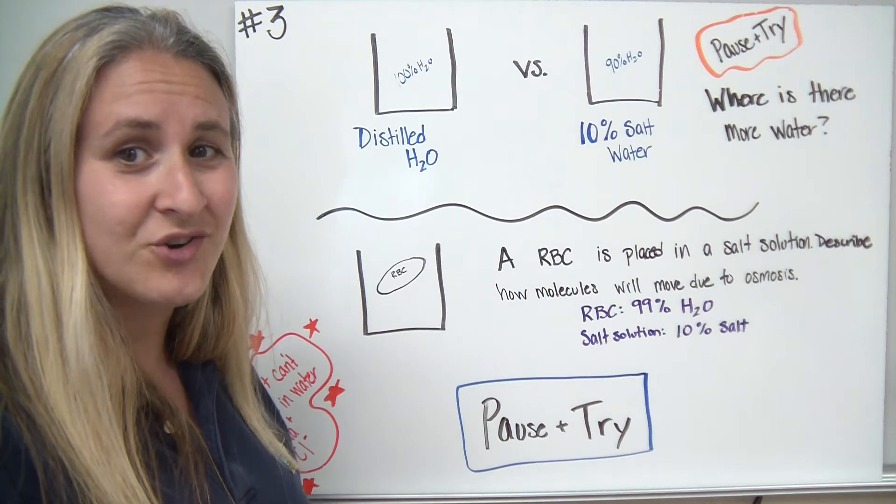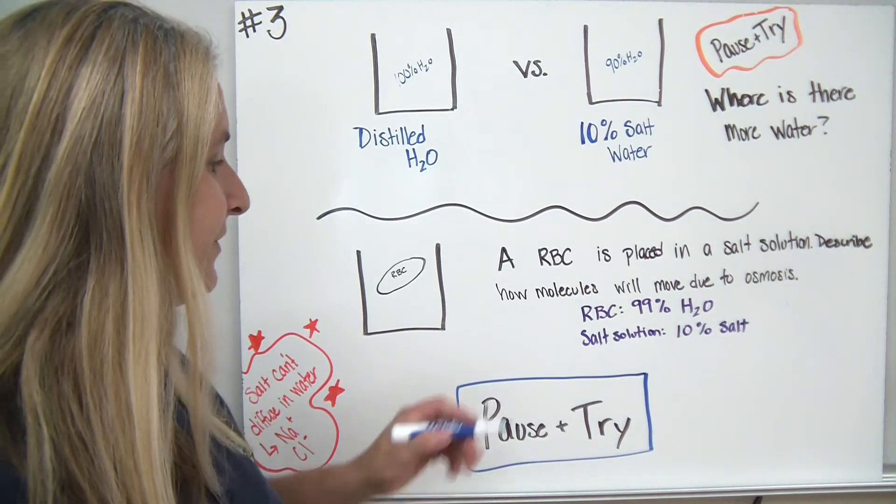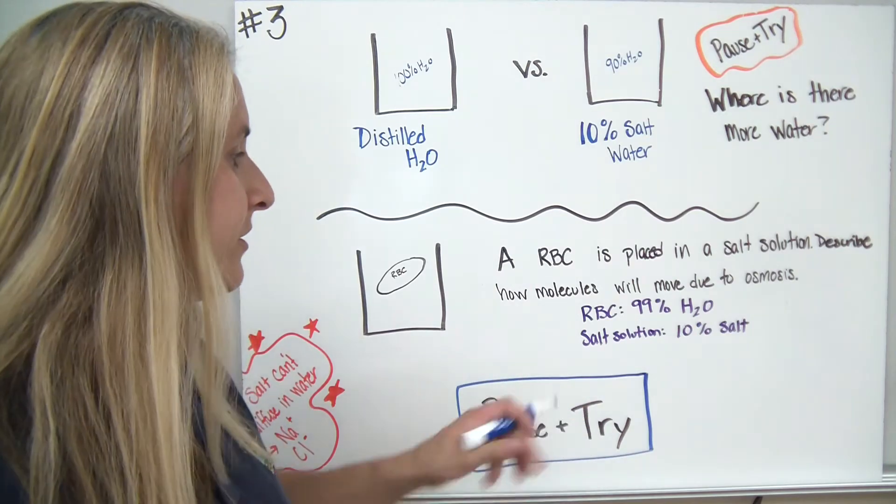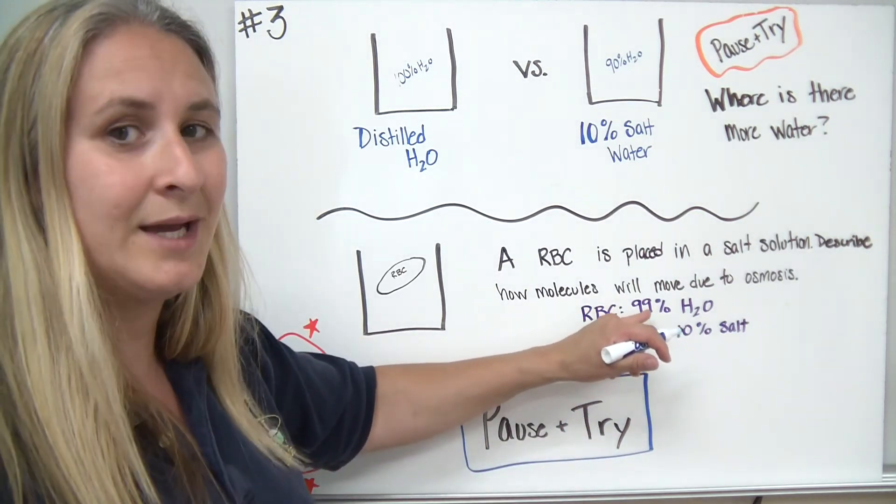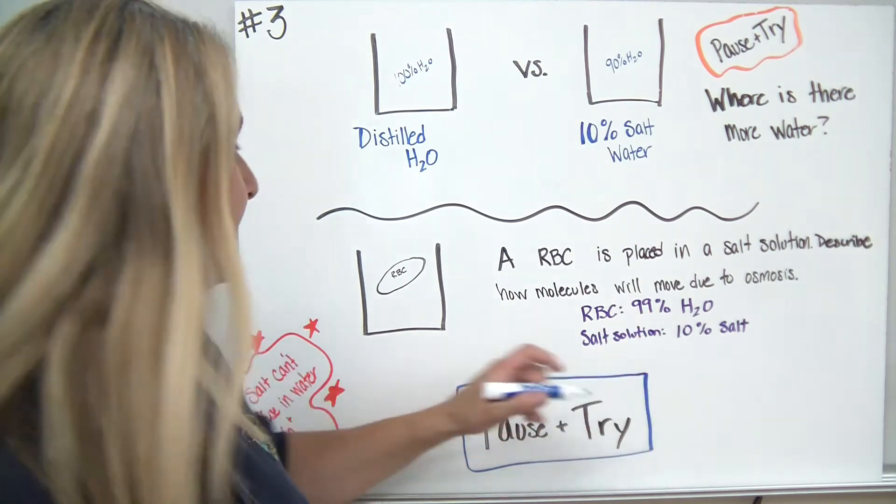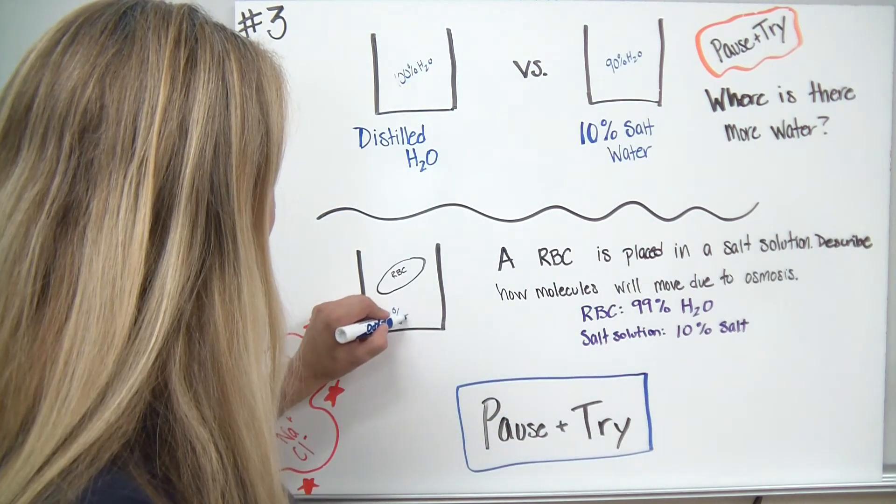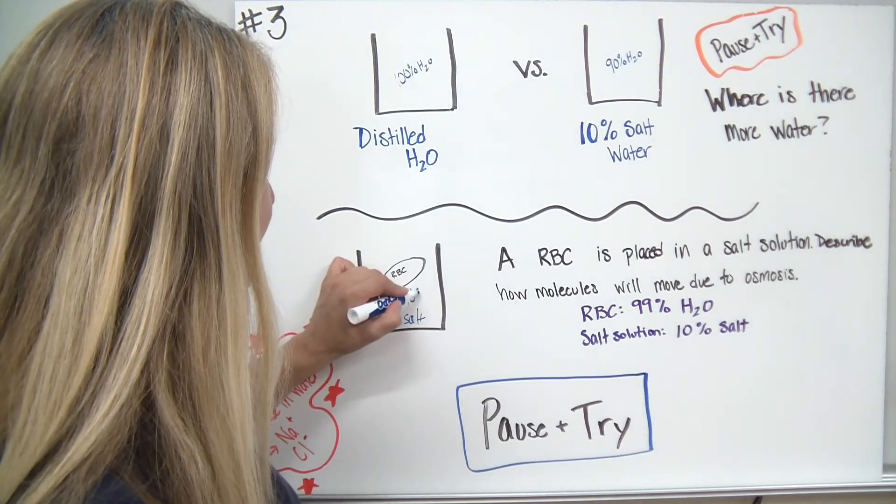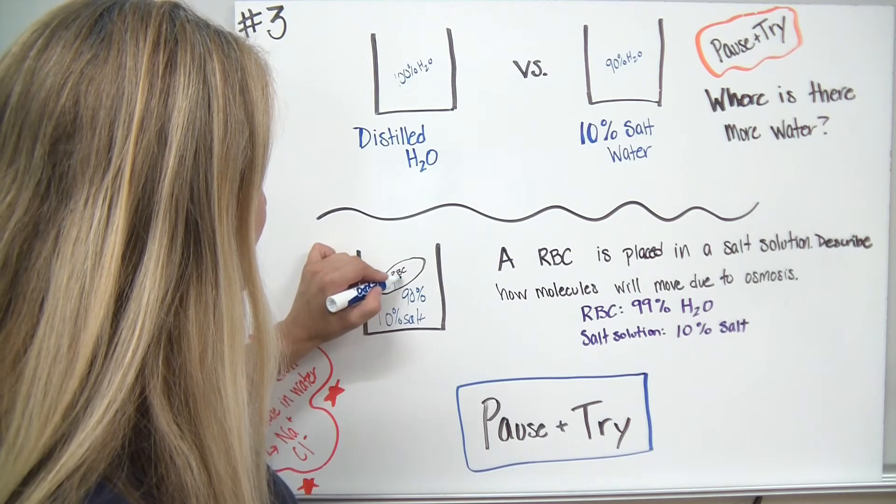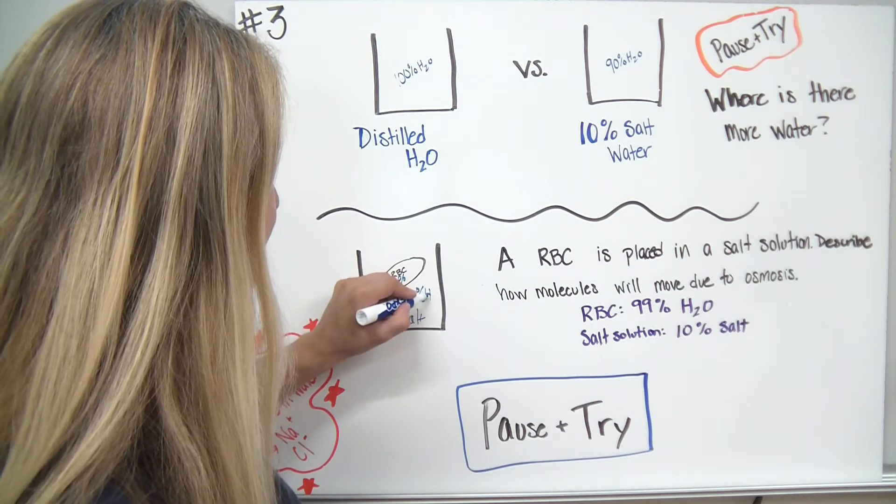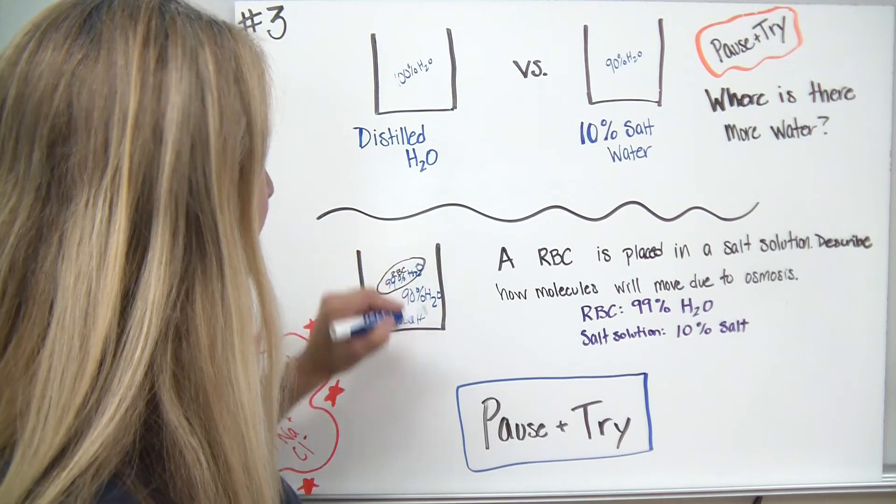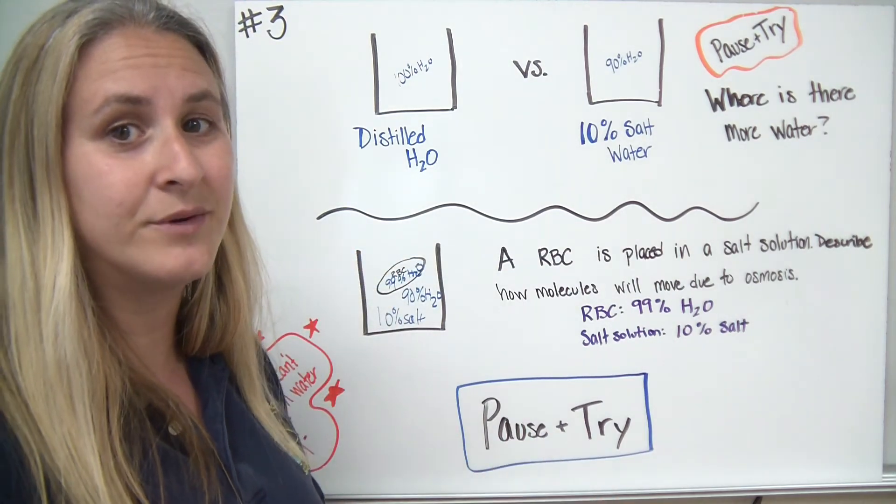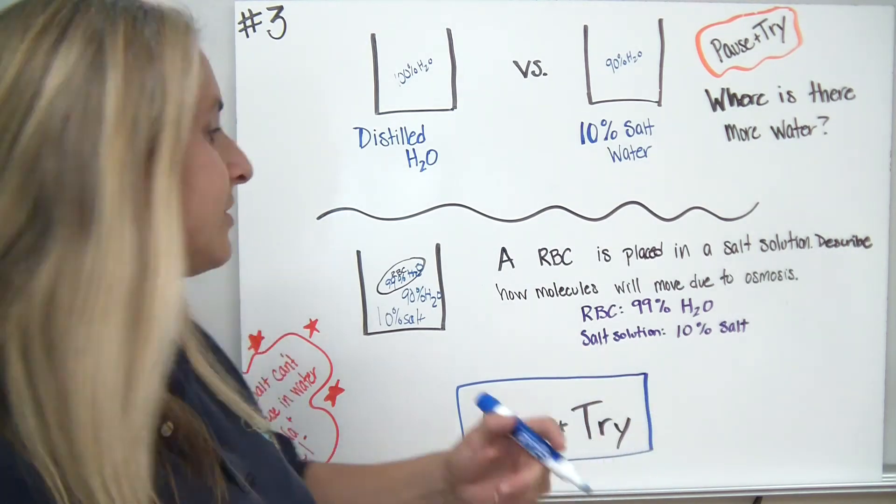Now that you've paused and tried, let's see what you came up with. The first thing we need to ask ourself is, where is there more water? Well, if my red blood cells are made up of 99% water, and we put them into a 10% salt solution, that 10% salt solution would have 90% water. And inside my cells, I had 99% water. Where is there more water? There's more water inside the cells. So which way is it going to move based on osmosis? From high to low.